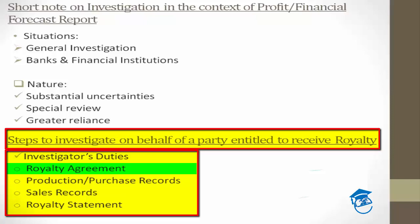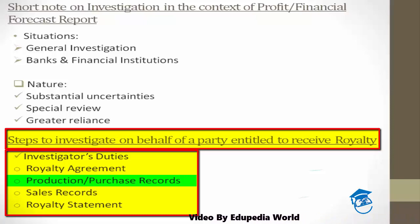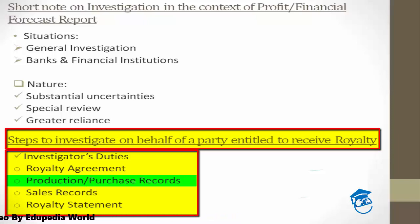Number two: production and purchase records. You need to examine the purchase records of the publisher — in cases where books have been purchased from printers for receipt. You also need to examine production records to ascertain the actual quantity and number of production units on the basis of which royalty is calculated on articles manufactured. Likewise, production records of mines should also be examined — whether on a quintal basis or ton basis.